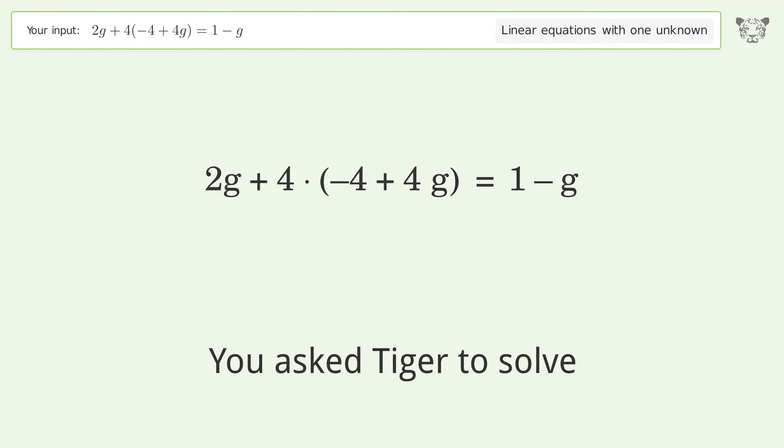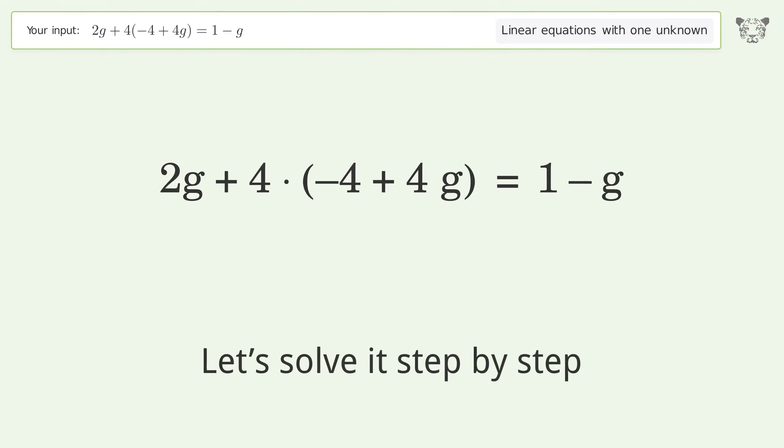You asked to solve this linear equation with one unknown. The final result is g equals 17 over 19. Let's solve it step by step and simplify the expression.